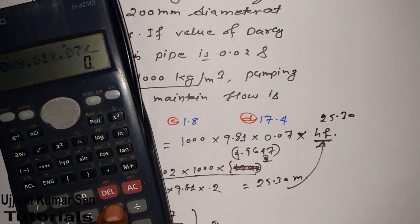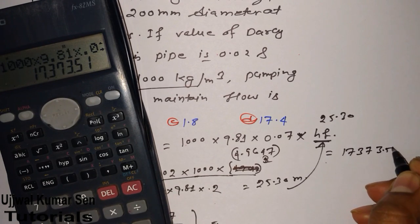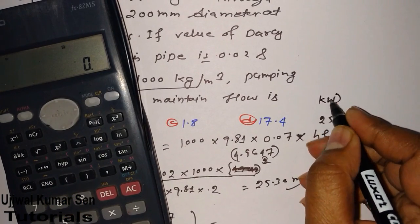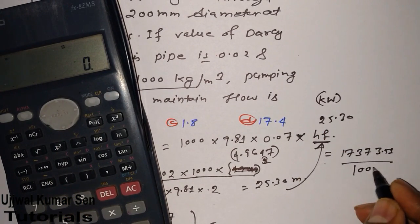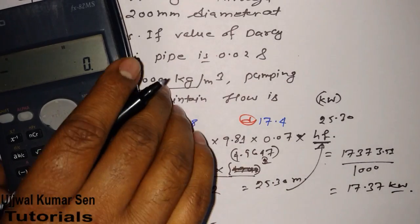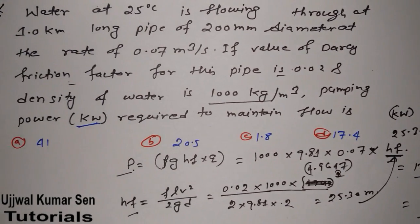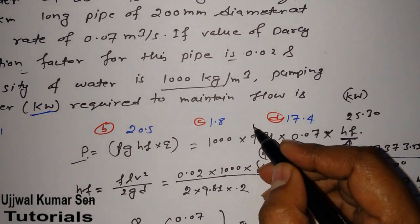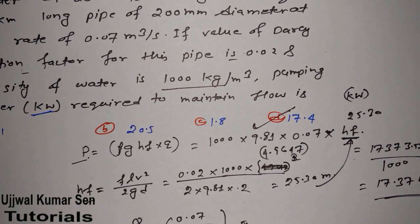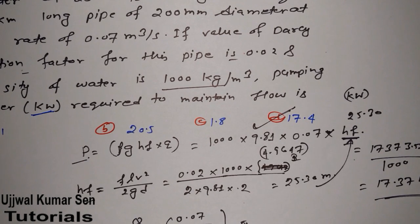Now we put H_F = 25.30 into the power formula: P = 1000 × 9.81 × 0.07 × 25.30 = 17,373.51 W. Converting to kilowatt by dividing by 1000 gives 17.37 kW. Checking the options, 17.4 kW matches option D — which is the correct answer. Thanks for watching, see you soon in the next video.